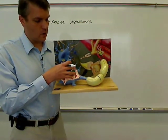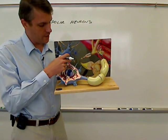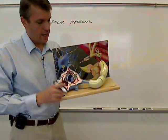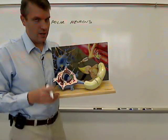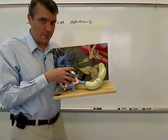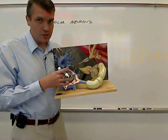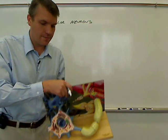It has a soma, or cell body, and it has dendrites coming out from the cell body, several dendrites, and then it has one axon. The reason it's called a multipolar neuron is because coming from the cell body, or soma, you have several appendages, the dendrites and the axon.